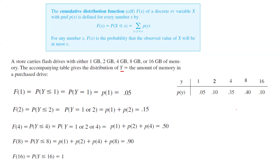F(16) is the probability that Y is less than or equal to 16. If you add all of these probabilities together, it becomes 100%, or 1.